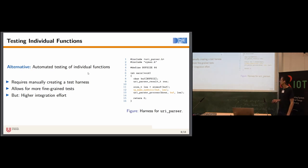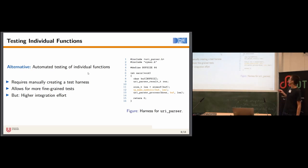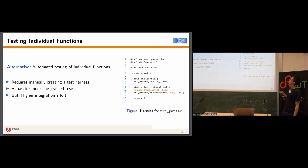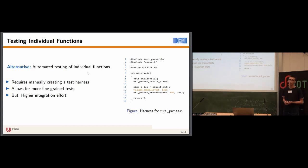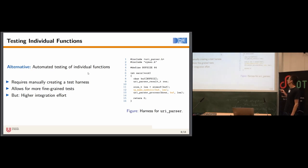These test harnesses look like this simple example for the URI parser module. The central function is the URI parser process function, invoked in line 13. Since we want to explore execution paths through this function, we pass a buffer allocated in line 8. This buffer is filled with symbolic values in line 12 through a custom utility function called vp_make_symbolic, which takes a buffer and a length and fills it with the specified number of symbolic bytes.